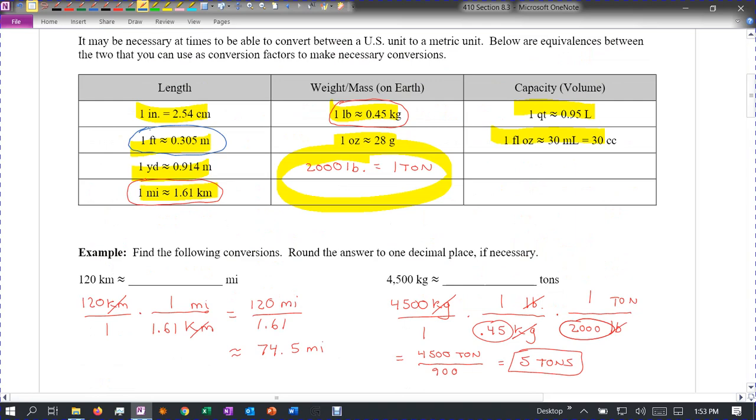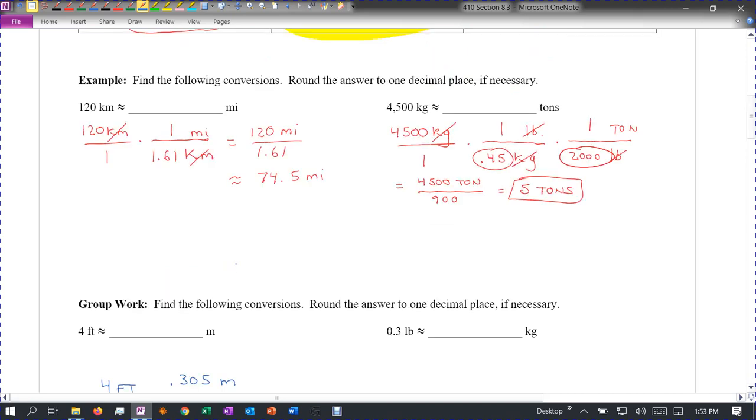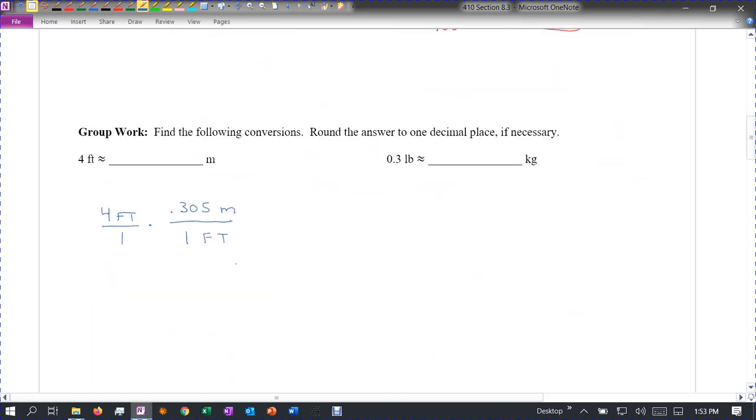1 foot is .305 meters. So we put feet on the bottom. 1 foot is .305 meters. Double check that. Yes. Feet cancel. Multiply straight across. 4 times .305 should give you 1.2. It wants us to round to one decimal place, so 1.2 meters.